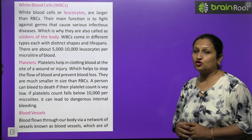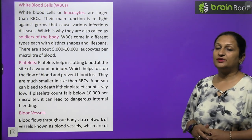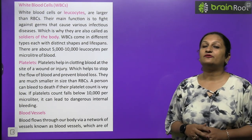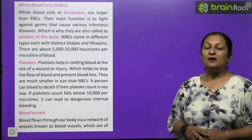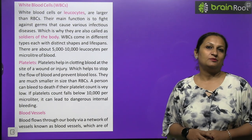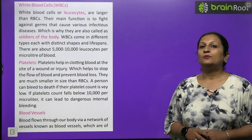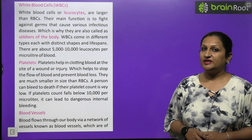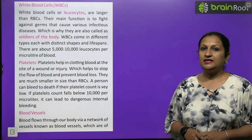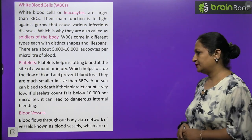The next component of the circulatory system is blood vessels. In our body, there are three types of blood vessels: arteries, veins, and capillaries.